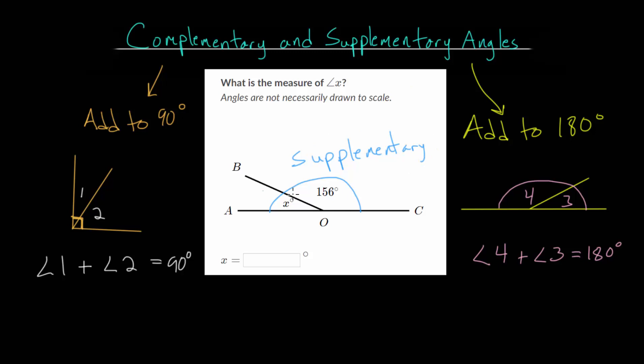So we can set up an equation and say that this angle AOB plus this angle that's 156 degrees - this is BOC - these are equal to 180 when you add them together. So angle X plus 156 degrees equals 180. And from here, we just subtract 156 on each side. So angle X is 24 degrees.